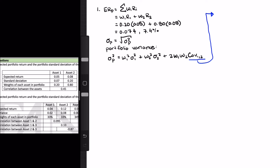The covariance of assets 1 and 2 is the correlation of assets 1 and 2 times the standard deviation of each asset. Since we have the correlation, we plug in 0.45 times the standard deviation of asset 1 (0.07) and asset 2 (0.20). Multiplying that all together gives us 0.0063.